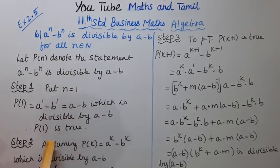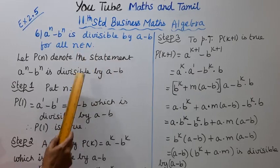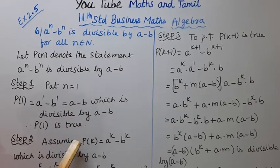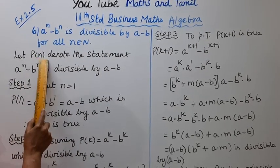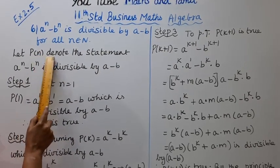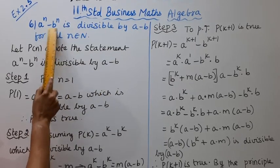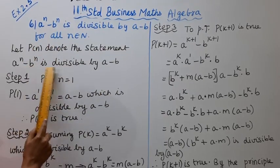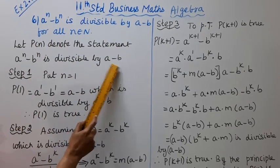This proof has Step 1, Step 2, and Step 3. Mathematical induction will be used throughout. Let P of n denote the statement: a power n minus b power n is divisible by a minus b.